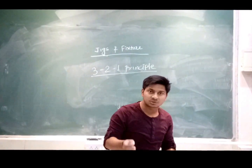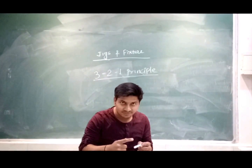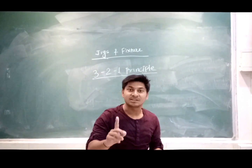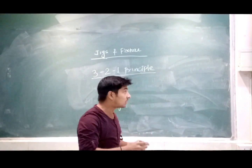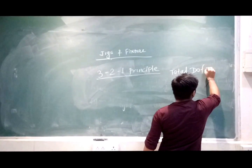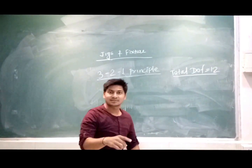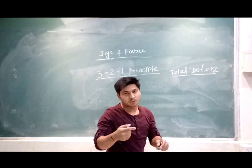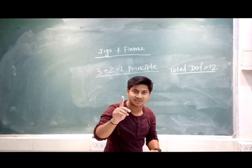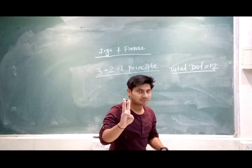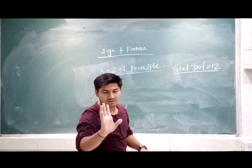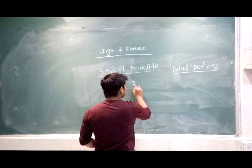In theory of machines, the maximum degree of freedom is six. But in manufacturing science, positive x-axis is taken as one degree of freedom and negative x-axis as another, so each axis contributes two degrees of freedom. Total degrees of freedom in manufacturing science is 12 — six translational (positive and negative x, y, z) plus six rotational (clockwise and anticlockwise in planes XY, YZ, ZX).